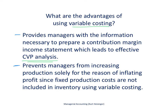Secondly, variable costing prevents managers from increasing production solely for the purpose of inflating profit. There can be real issues with absorption costing when increasing production increases inventory levels — which is not always a good thing if we're not selling the product. Those fixed costs become hidden in inventory and don't hit the income statement until goods are sold, spreading fixed costs over more units. This creates potential issues for managers to inflate profit, which is why some companies prefer variable costing.